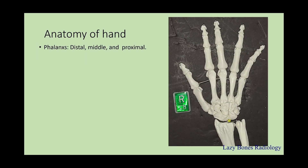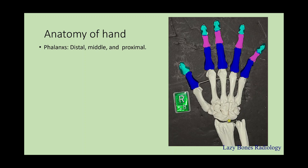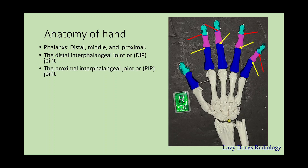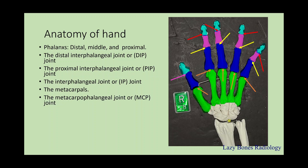Anatomy of the hand: the phalanges — you have the distal, middle, and proximal phalanges. In between them, you have the distal interphalangeal joints, or DIP joints, located within the 2nd through 5th digits. Next, you have the proximal interphalangeal joints, also known as the PIP joints. The interphalangeal joint is only found in the first digit. Next, you have the metacarpals — remember to know which one is which, starting from lateral to medial, 1 through 5. In between those is the metacarpophalangeal joints, also known as the MCP joints.